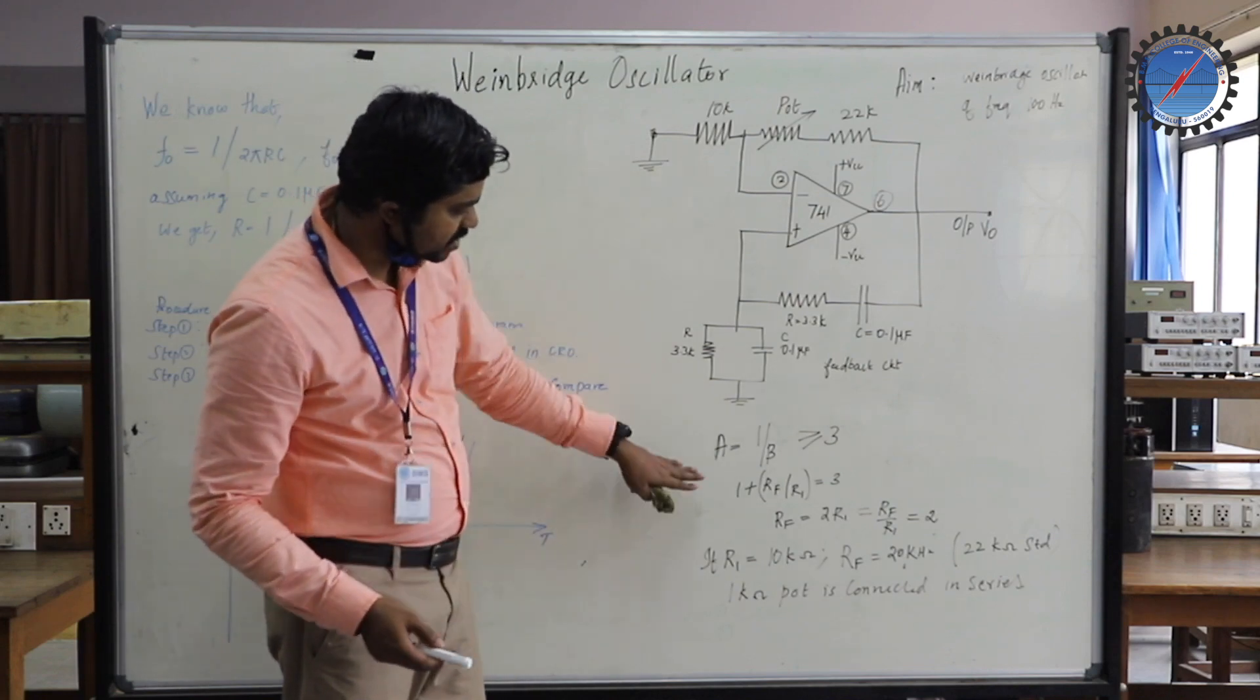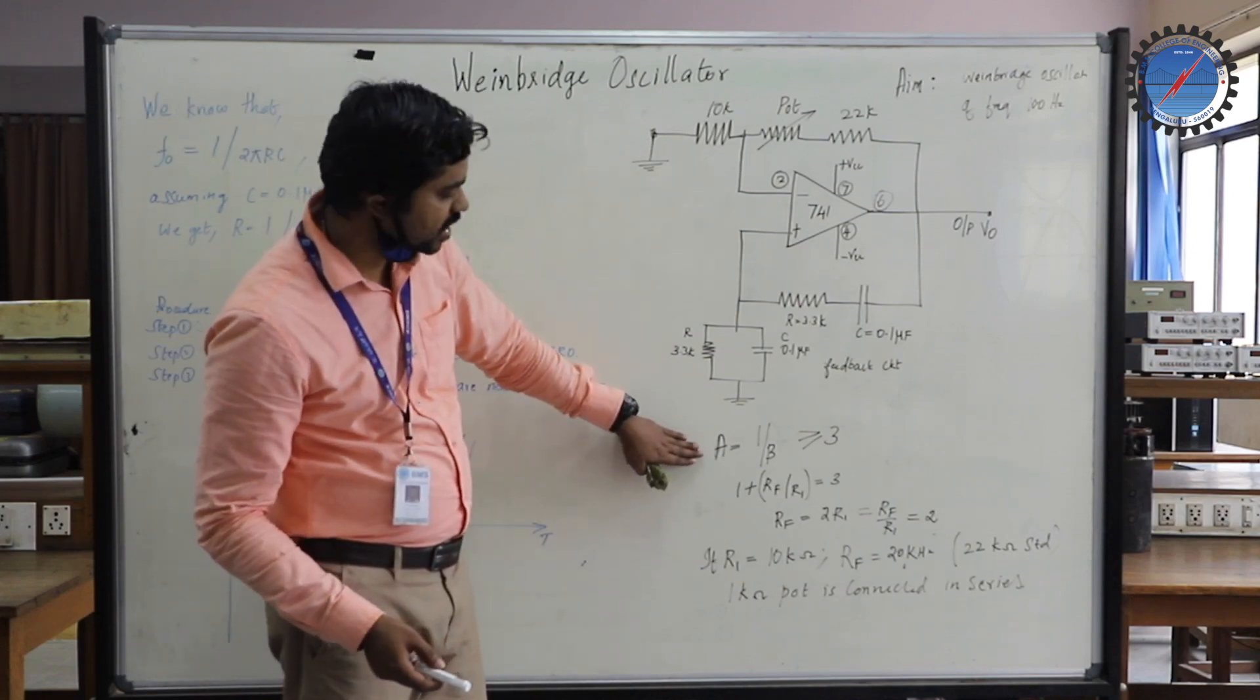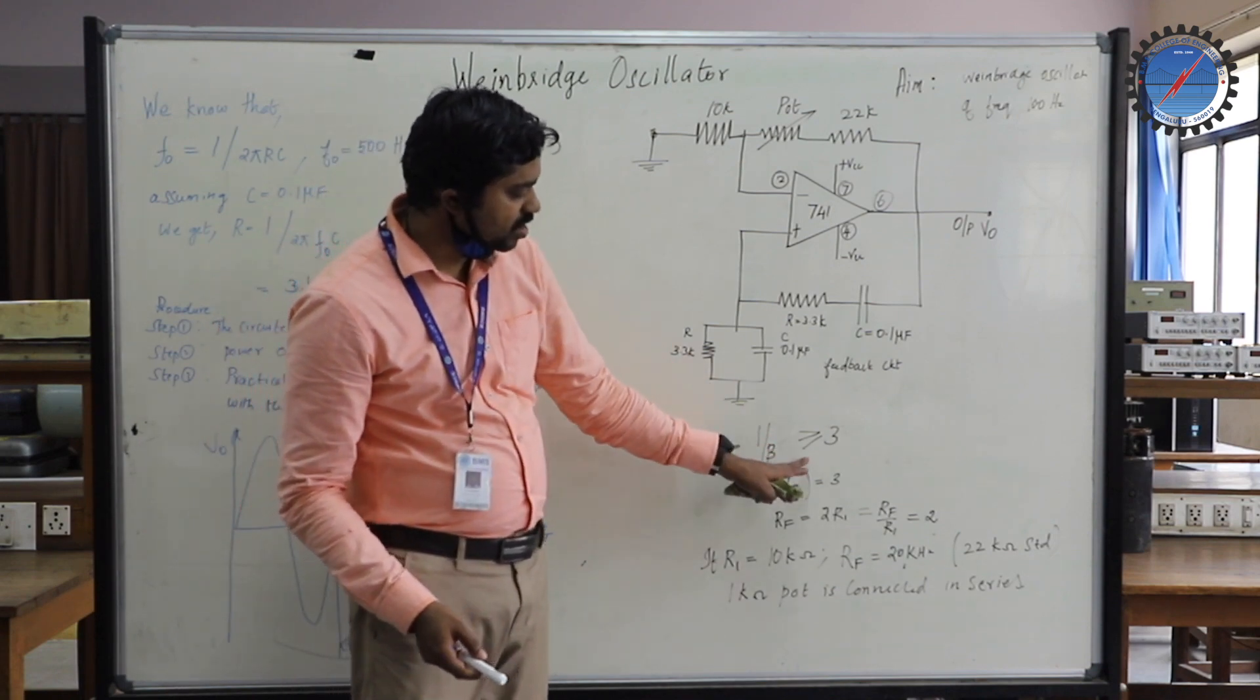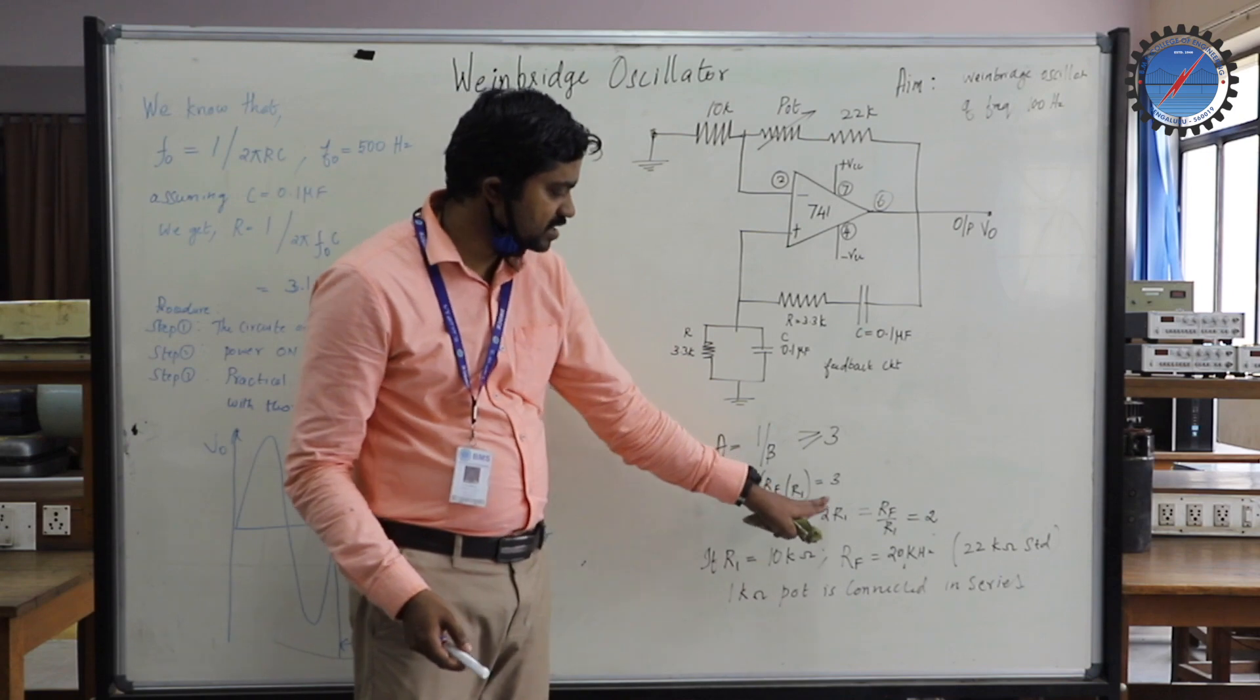For the calculation part, the formula is gain A equal to 1 by β, which is greater than or equal to 3. Let us have it as equal to 3.